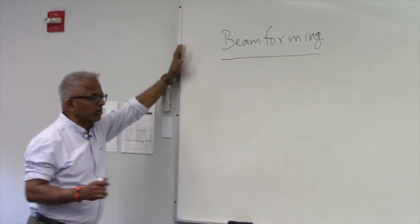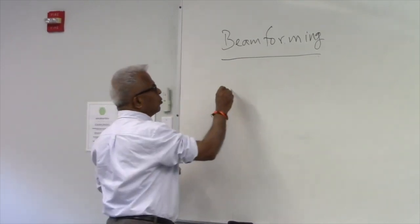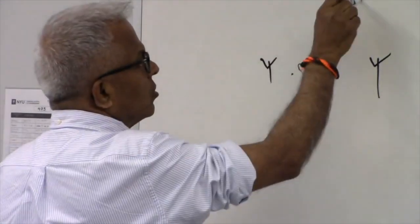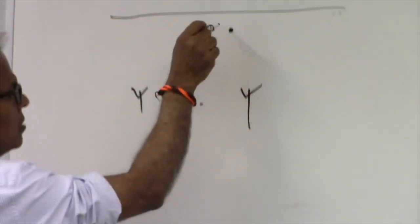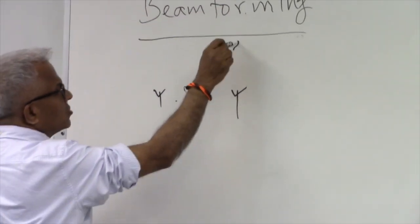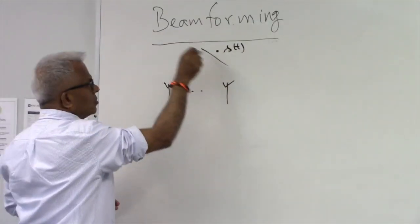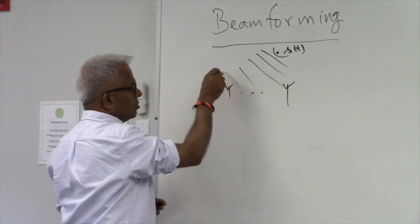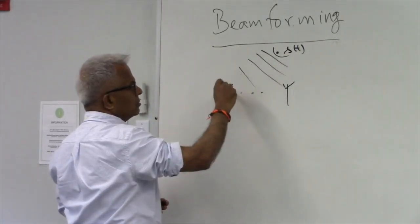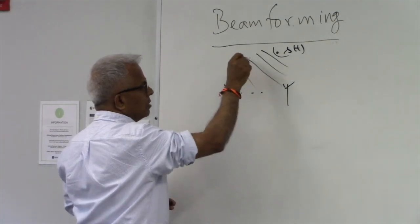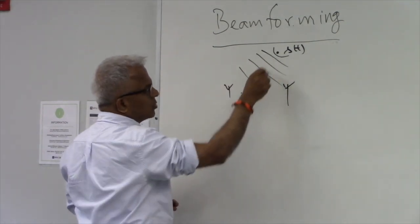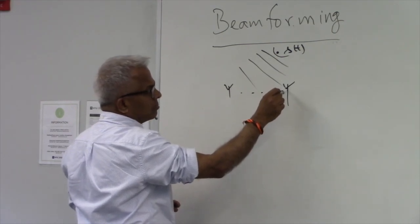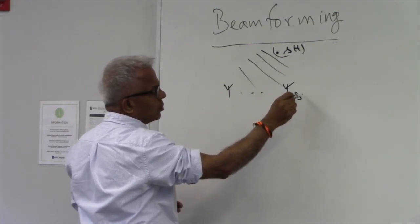In beamforming, you use more than one sensor to collect the data. You have a source somewhere, and we'll assume that the source is far enough so that by the time it comes to you, the rays come as plane waves. The signal gets to the sensor which is closest to it.